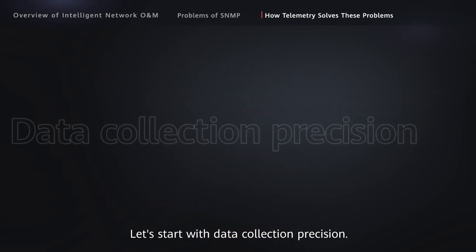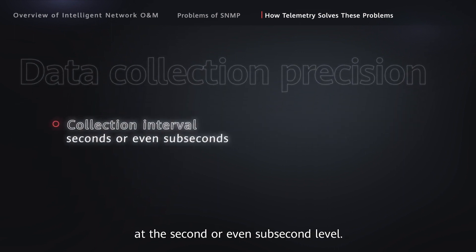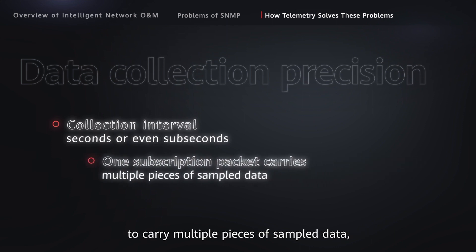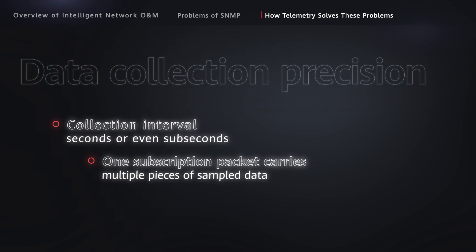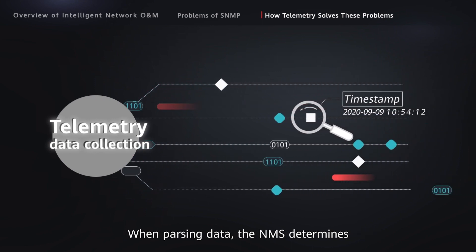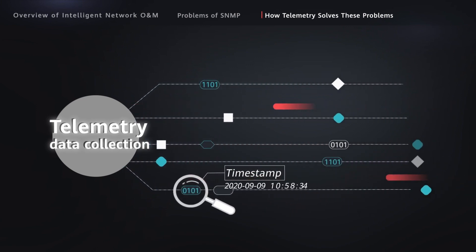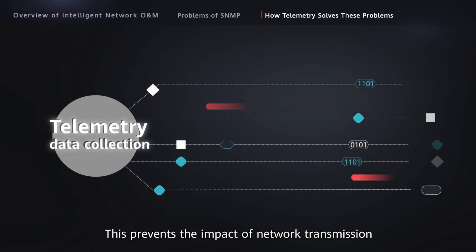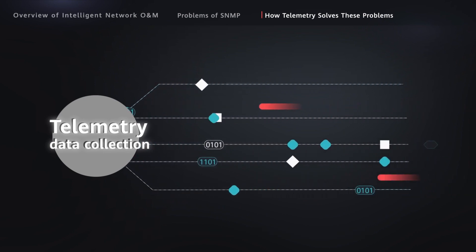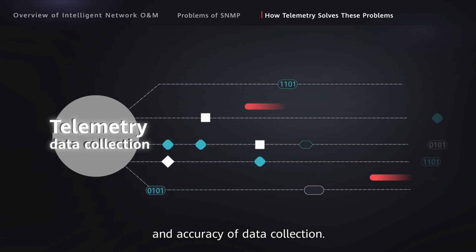Let's start with data collection precision. First, the telemetry collection interval is at the second or even sub-second level. Second, telemetry allows one subscription packet to carry multiple pieces of sample data, reducing the number of exchanges between the NMS and devices. Third, data collected by telemetry carries a timestamp — when passing data, the NMS determines when the data was sampled based on those timestamps, which prevents the impact of network transmission delay on sample data. By leveraging these approaches, telemetry improves the precision and accuracy of data collection.